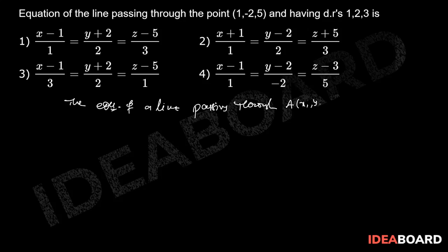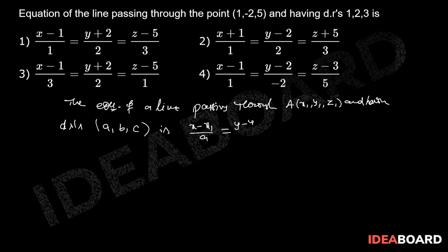X1, Y1, Z1 and having direction ratios A, B, C is: X minus X1 by A equals Y minus Y1 by B,